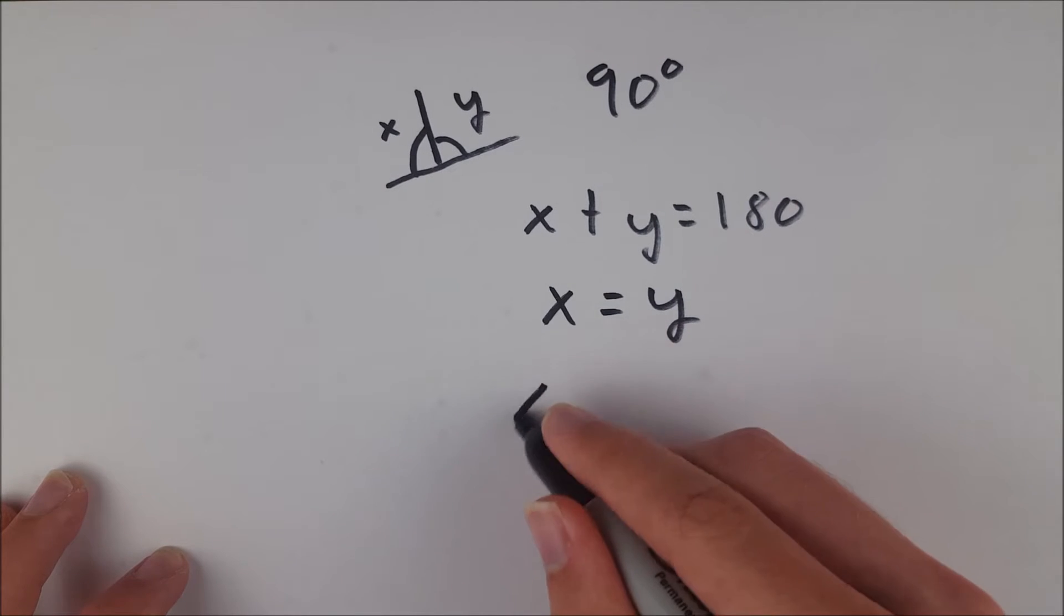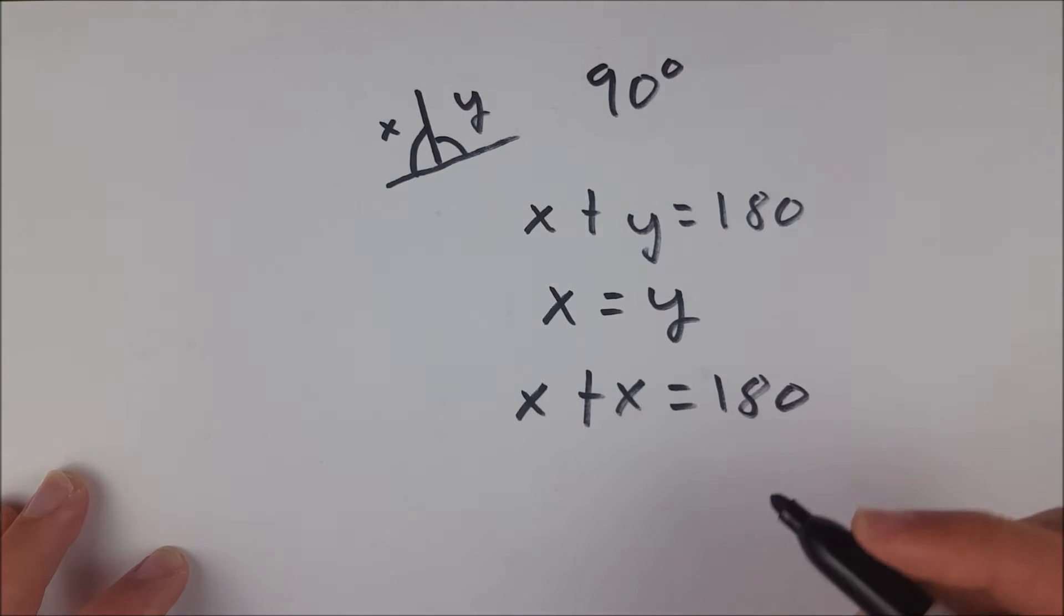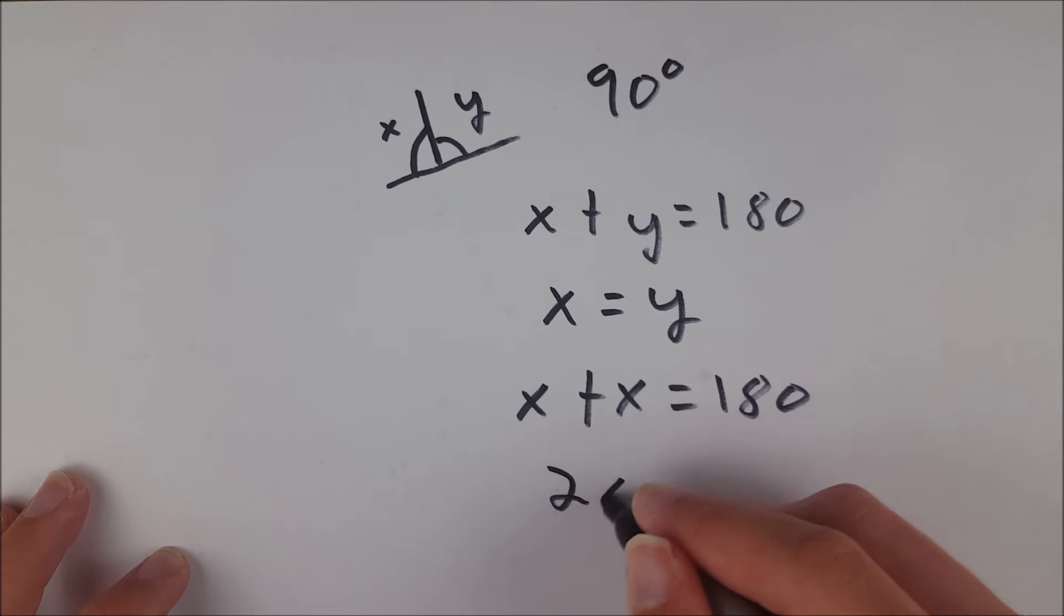So then by substitution, we know that x plus x equals 180, substituting the x in for our y. So we know, adding like terms, that 2x equals 180.